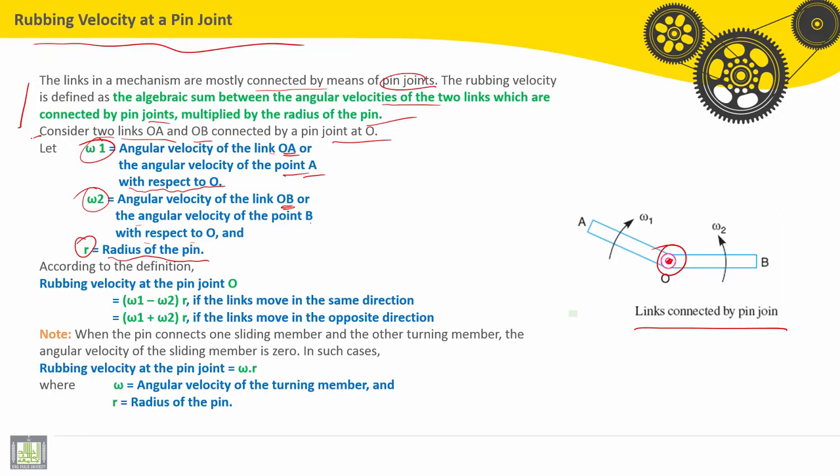According to the definition, rubbing velocity at the pin joint O equals what? Two cases are there. If the links move in the same direction, and this is the case here, both OA and OB, the rubbing velocity is equal to omega 1 minus omega 2 multiplied by R.